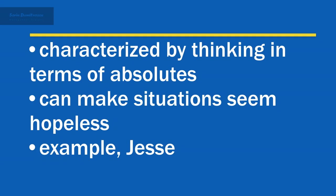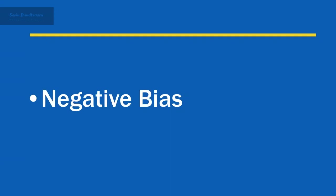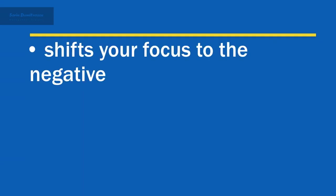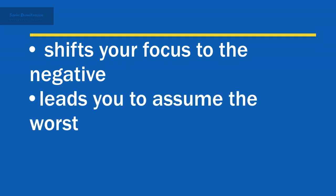By viewing the moved deadline as so burdensome and impossible, Jesse kept himself from finding a way to pull everyone together to succeed. A negative bias shifts your focus to the negative, excluding the positive, and leads you to assume the worst in cases when it isn't warranted.